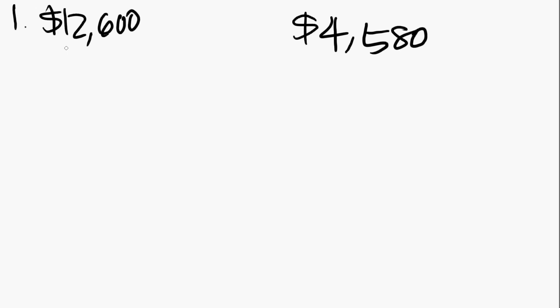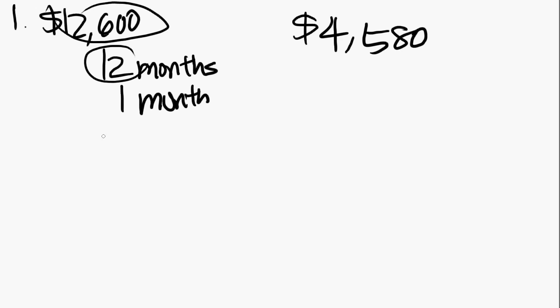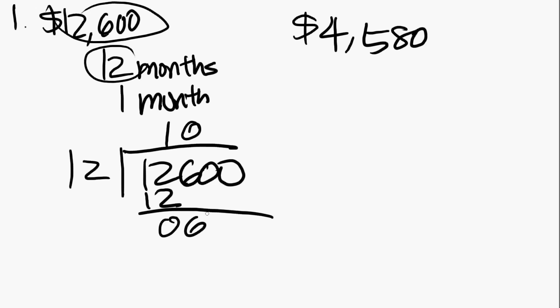You have to remember that the $12,600 was split evenly over 12 months. The first thing we want to do is figure out how much was allocated for one month. We do that by dividing this number by this number. So what you have is $1,050 going into one month.